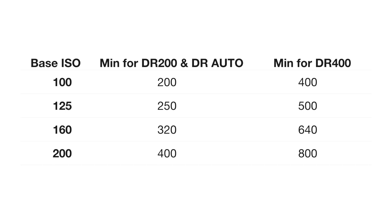The new GFX cameras with a base ISO of 100 need a minimum ISO of 200 to use DR200 and DR Auto, and a minimum ISO of 400 for DR400. The latest X-series cameras like the X-T5 and X-H2 need a minimum ISO of 250 for DR200 and DR Auto, and 500 for DR400. You're really just doubling your base ISO for DR200 and DR Auto, and doubling it again for DR400.